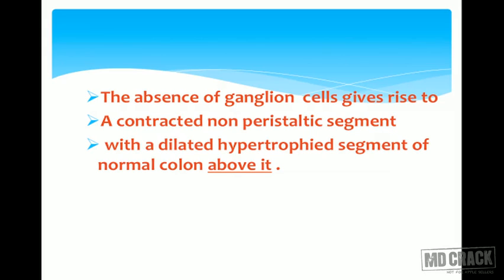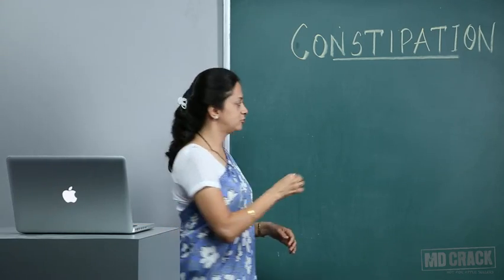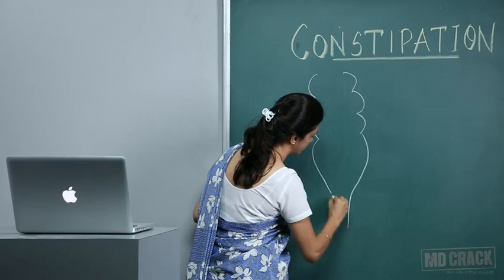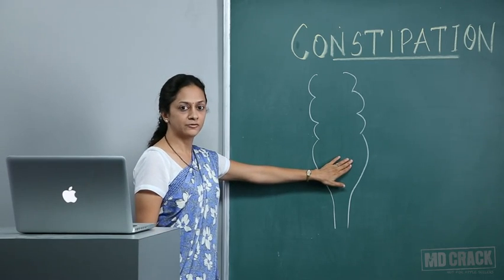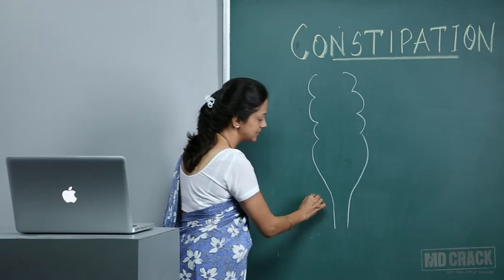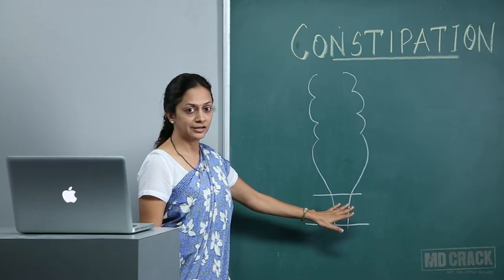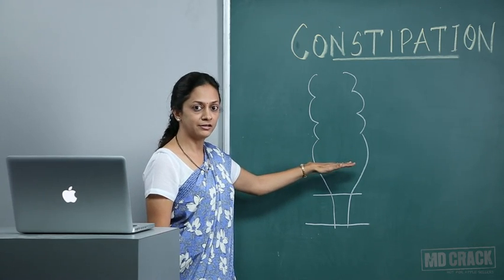The absence of ganglion cells gives rise to a contracted, non-peristaltic segment with a dilated hypertrophic segment of normal colon above it. To illustrate: the diseased aganglionic segment is contractile and non-peristaltic, while the segment above it becomes dilated and hypertrophic.